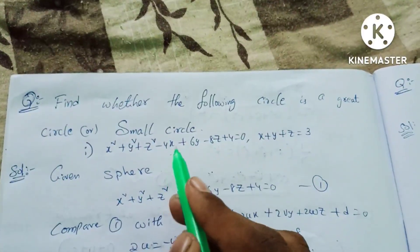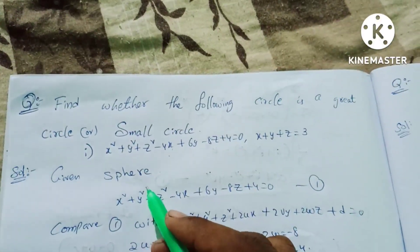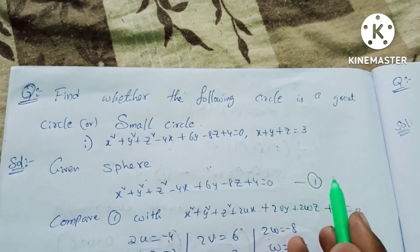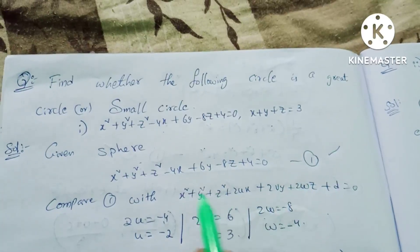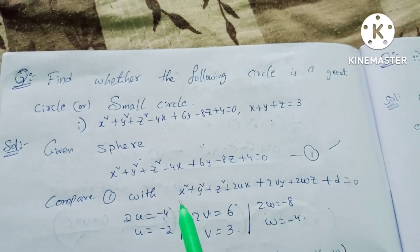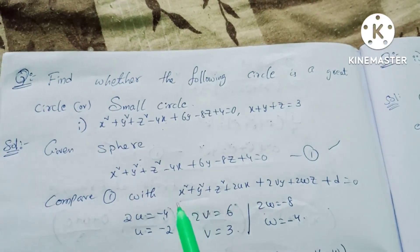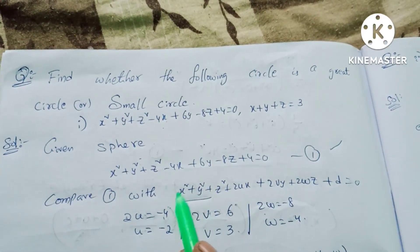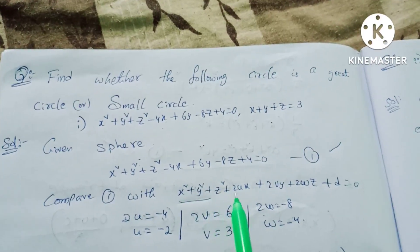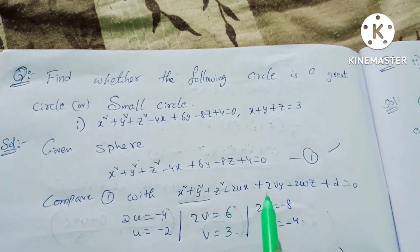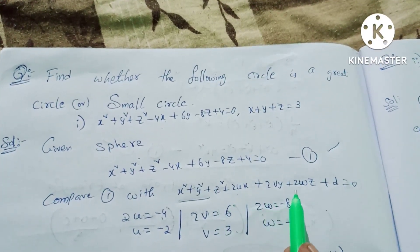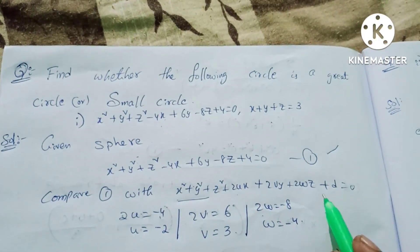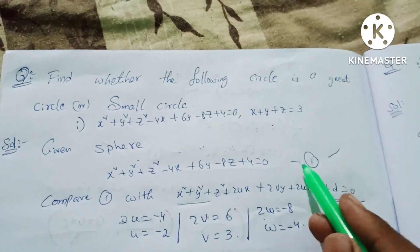So let's take the given sphere. This sphere is in general form. We can compare it with the general form: x² + y² + z² + 2ux + 2vy + 2wz + d = 0.